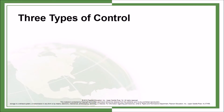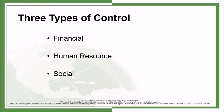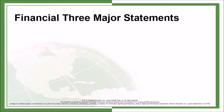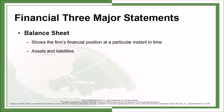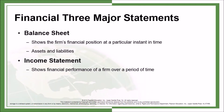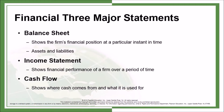There are three types of control systems: financial, human resource, and social. Financial control has three major statements. Balance sheet shows the firm's financial position at a particular instant in time — assets and liabilities. Income statement shows financial performance of a firm over a period of time. Cash flow shows where cash comes from and what it is used for.